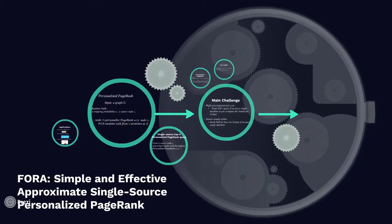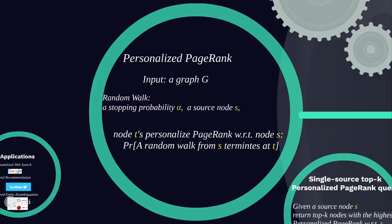Let's first see the definition of Personal PageRank. We are given an input graph G, and the definition relies on a random walk that runs as follows. It starts at a source node S, then with probability alpha it stops at the current node, and with one minus alpha probability it randomly jumps to one of the outer neighbors. A node T's personalized PageRank is the probability the random walk from S terminates at node T.